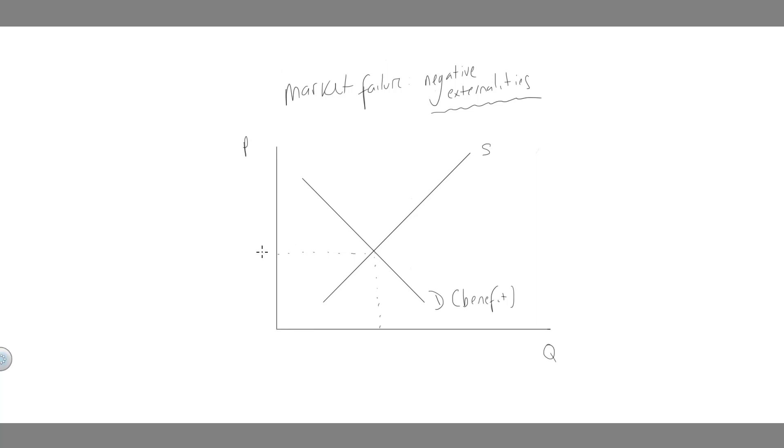So we call this the market price, and that's the market quantity. So if I talk about M, the equilibrium from the price mechanism.